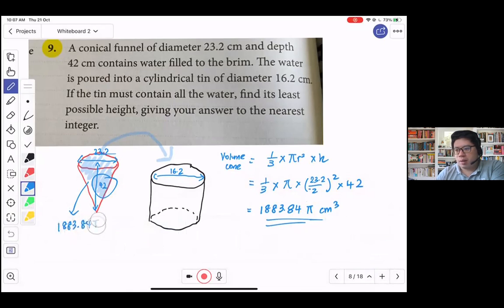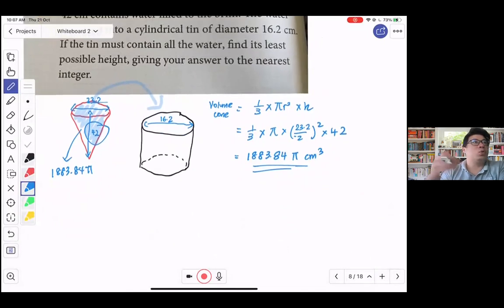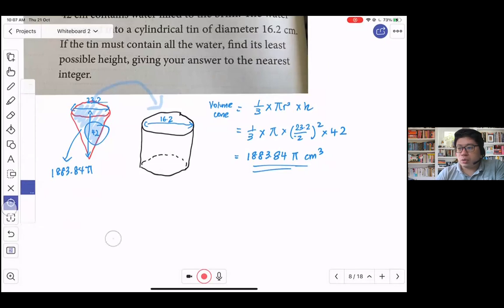Of course you notice that because this is an intermediate step, that's why I didn't evaluate the π - this is to make the answer more detailed and to have more significant figures. Now I'm going to pour this into my tin.